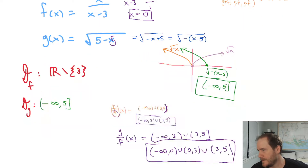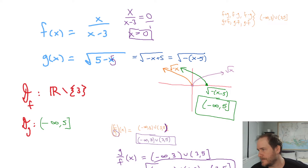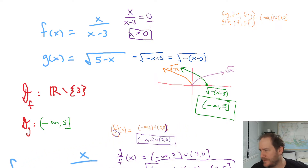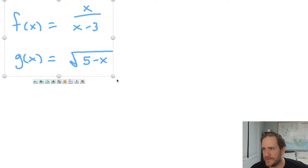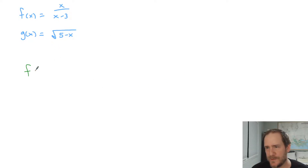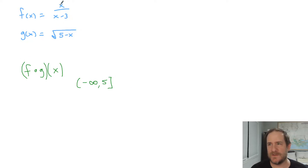Now the big three: compositions. If we do F composed with G, or G composed with F, order matters quite a bit. For F composed with G, it's not about the intersection of domains anymore. First you have to satisfy the domain of function G, which is negative infinity up to five. Then you also have to make sure you're in the domain of F, and the only restriction on F is three.